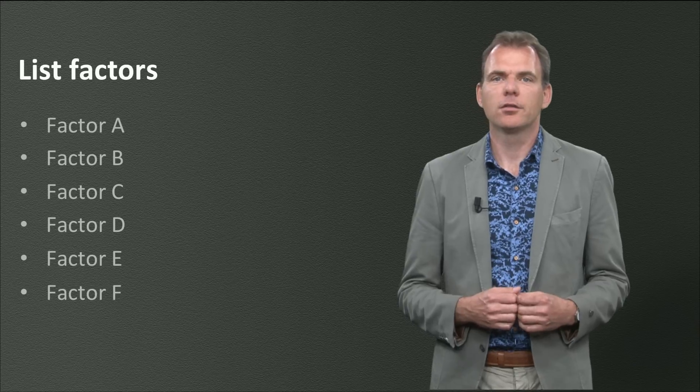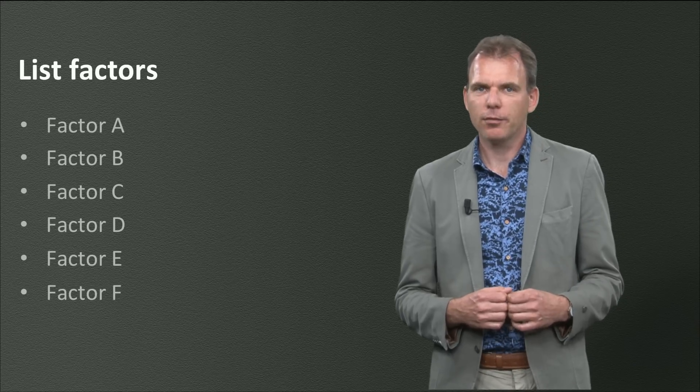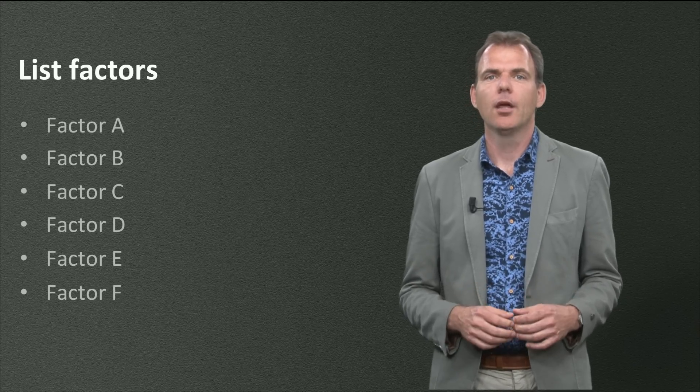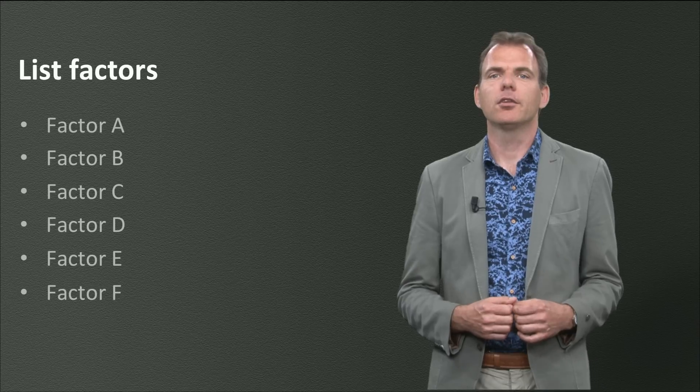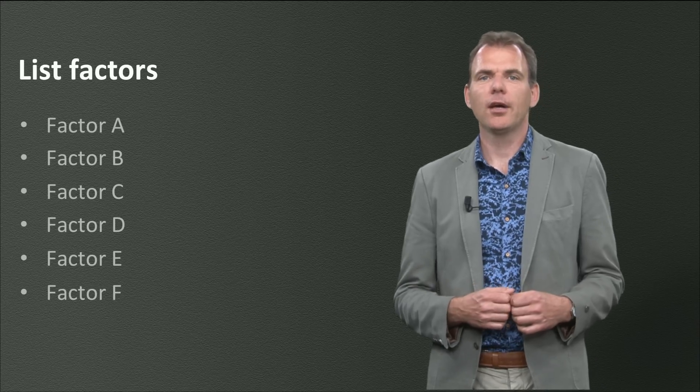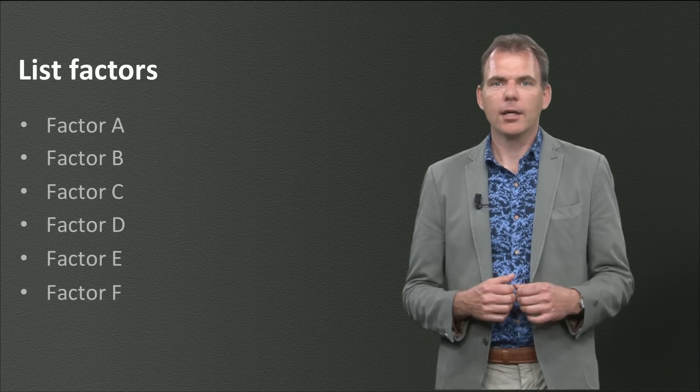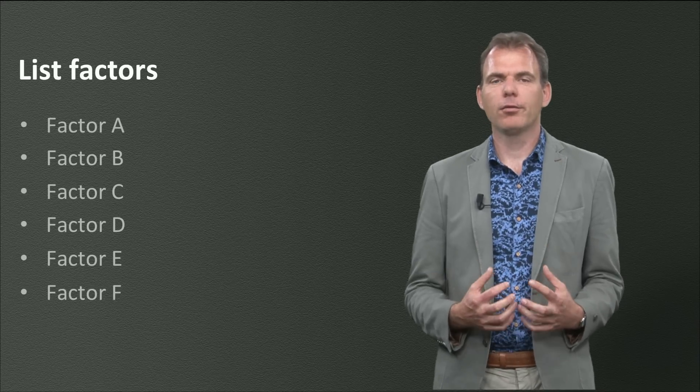If you find out that a factor does not have a unit, operationalize that factor further in sub-factors. Things like the weather can't have a unit, however, it might be an important factor. So it gets operationalized in wind speed, rainfall, average temperature, etc.